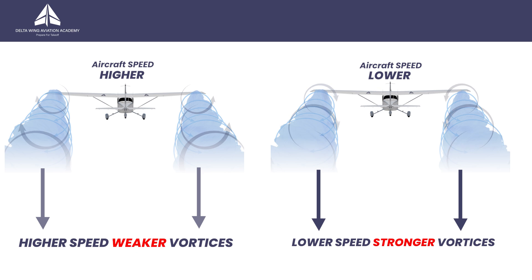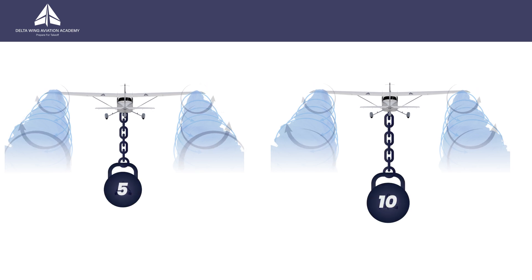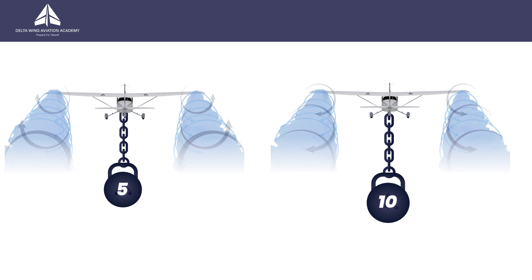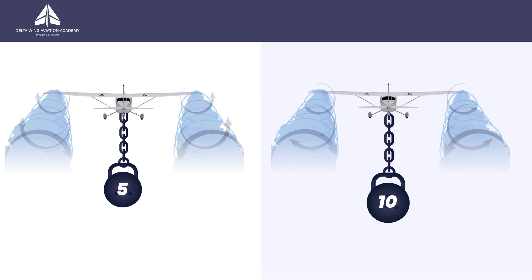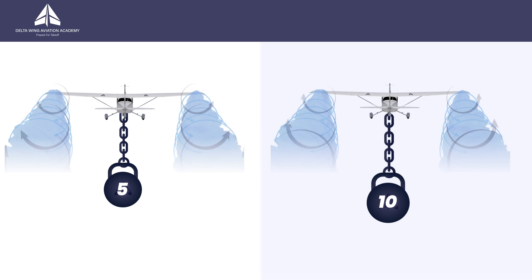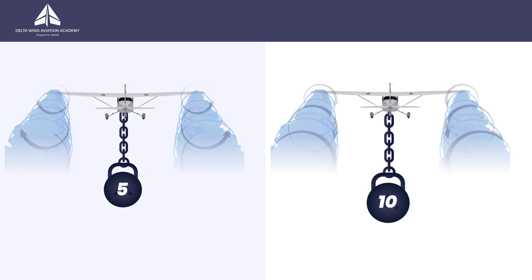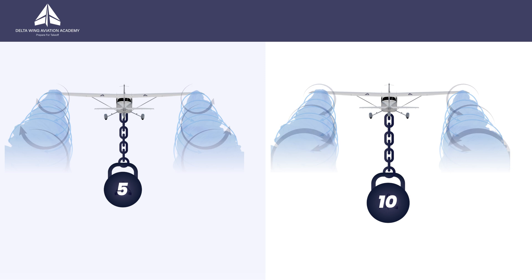Similarly, if we look at an aircraft producing different amounts of lift at a fixed airspeed — due to operating at different weights or accelerating into a turn — the strength of the wingtip vortices changes again. With more lift due to higher weight or higher load factor, the pressure differential above and below the wing gets stronger. This results in increased airflow around the wingtips and the resulting stronger wingtip vortices. At lower weights or lower load factors, the opposite happens and we see weaker vortices. Overall, we expect to see stronger vortices at higher weights, higher load factors, and lower speeds.